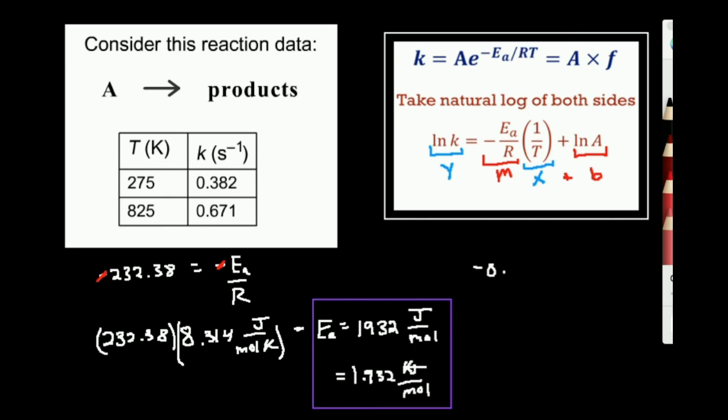And based on this, that's equal to the natural log of the Arrhenius factor. Now how do I undo a natural log? Well, I'm going to take e to both sides. And that's going to allow me to solve for the Arrhenius factor.